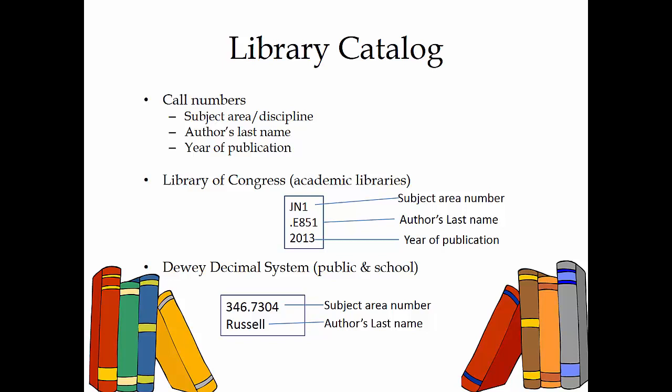The second part of the call number is assigned based on the author's last name, or the title if it is an edited book, and is a combination of letters and numbers. The last part is the year of publication. The Dewey Decimal classification system is mostly used in public and school libraries. There are ten divisions — the hundreds, from zero hundreds up to the nine hundreds — each with divisions in the tens place, and the subject is further divided into the decimal places. Both systems classify materials so titles in a subject area are together.